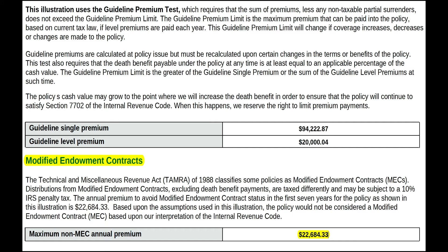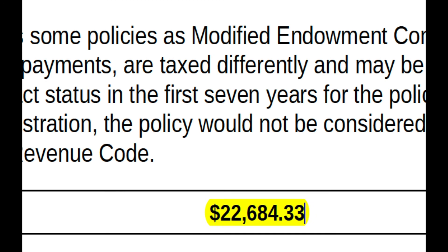You will most likely be contacted by your insurance company if a premium payment exceeds the seven-pay limit. This Securian policy is set up to avoid MEC status by the guideline premium test and the cash value accumulation test in year one only. And here they tell you the maximum premium to avoid MEC.